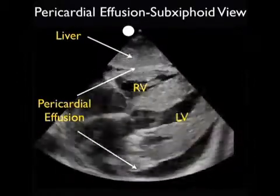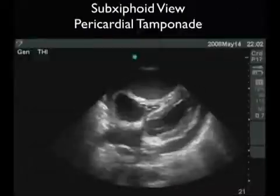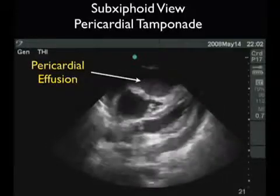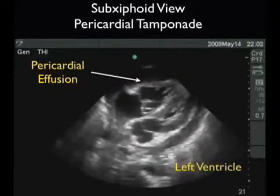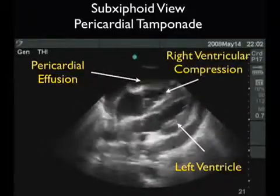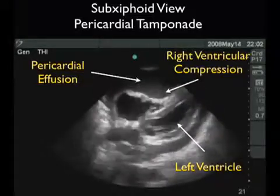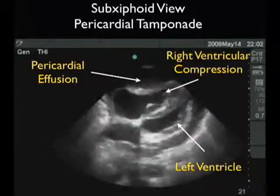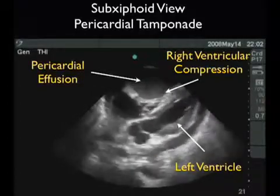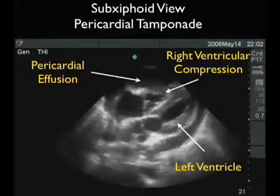If we see a large pericardial effusion on bedside echo, our next move is to look for signs of cardiac tamponade. Here's a patient who manifests all the signs of cardiac tamponade on bedside echo. Notice the very large pericardial effusion and the chaotic movement of the right ventricle as it struggles to open during diastole. The compression of the right ventricle in this patient is consistent with advanced cardiac tamponade. The right side of the heart is preferentially compressed before the left ventricle due to its lower pressure circuit.